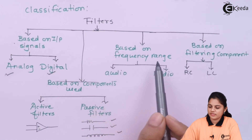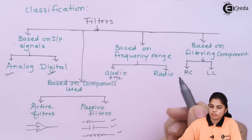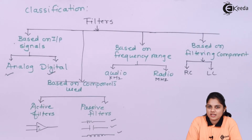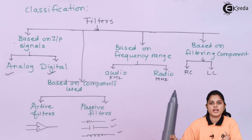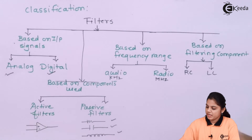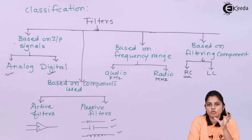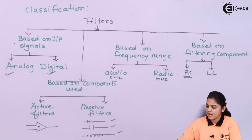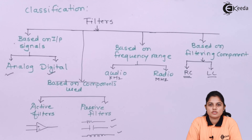Third, based on frequency range — the frequency range can be audio, which is in kilohertz, or radio frequency, which is in megahertz. If the filter is designed to pass megahertz frequencies, it is a radio frequency filter. Fourth, based on filtering component — it can be an RC (resistive-capacitive) network or an LC (inductive-capacitive) network, which are basically known as tuning networks.